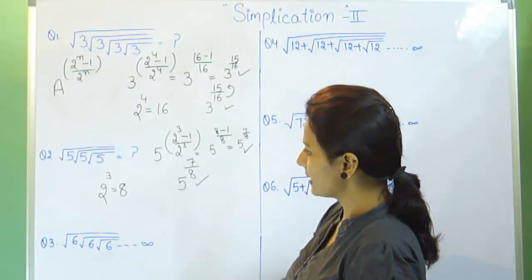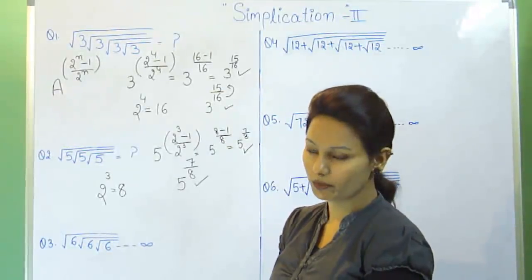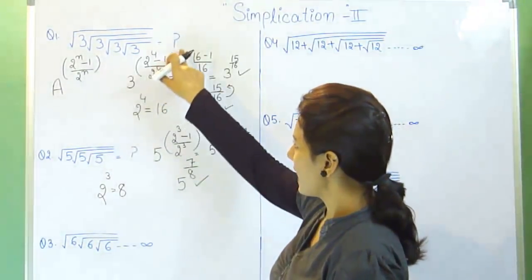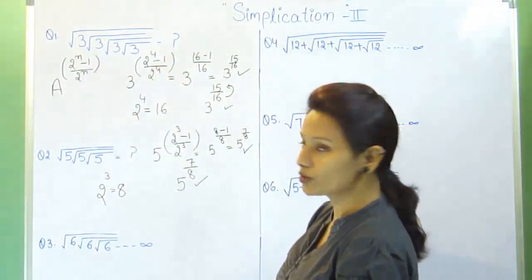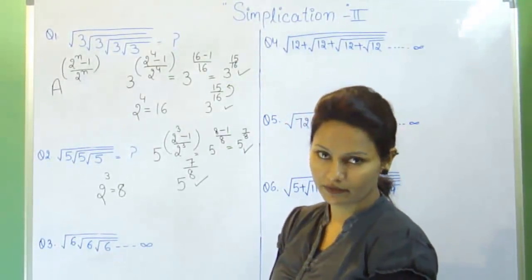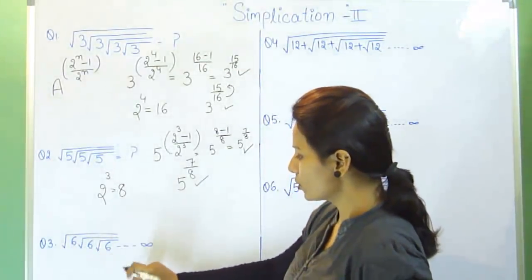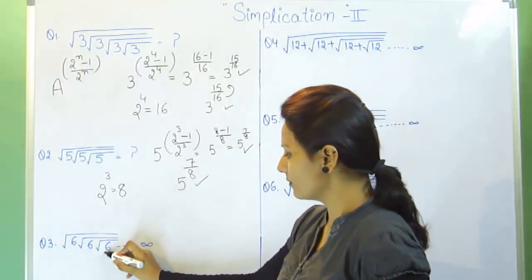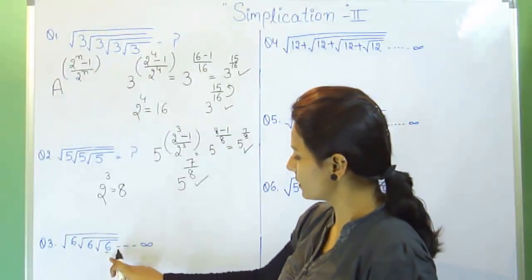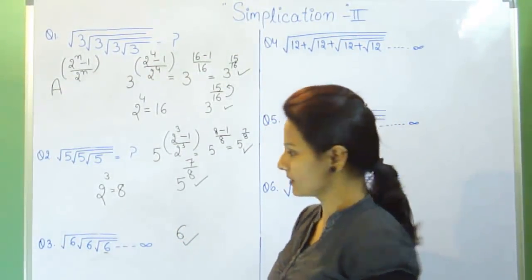Question number 3 is entirely different from questions 1 and 2. These questions have a question mark but this question goes to infinity. When the question goes to infinity, our answer is the same number which is written under the root, that is 6. So our answer is 6.